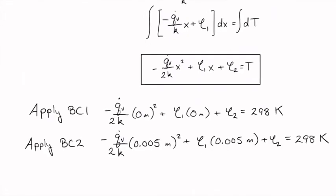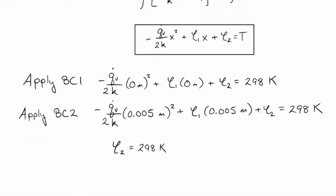Likewise, we apply the second boundary condition by plugging in the temperature is 298 at a position of 5 millimeters, and we write that in meters to agree with the units of our thermal conductivities.